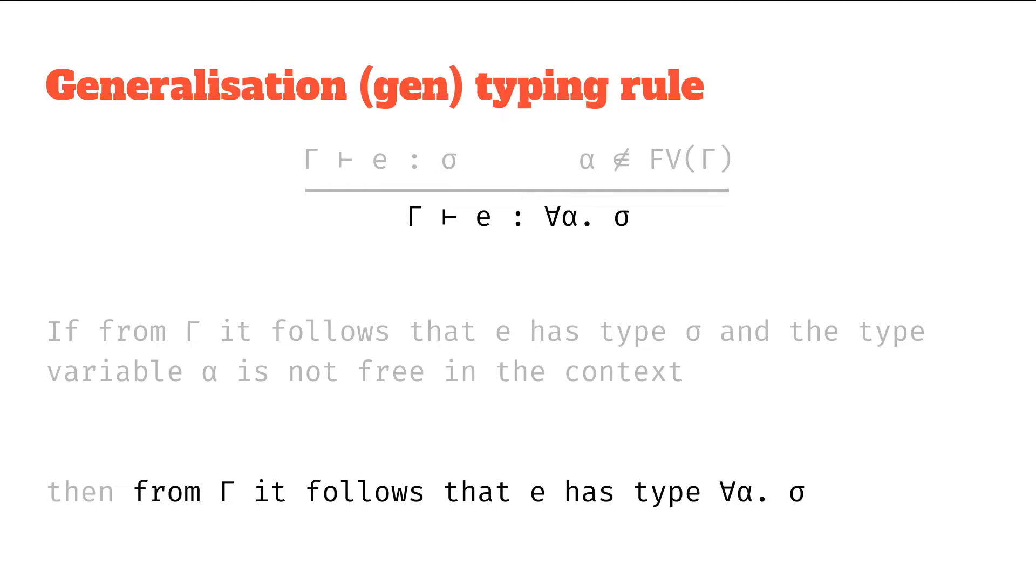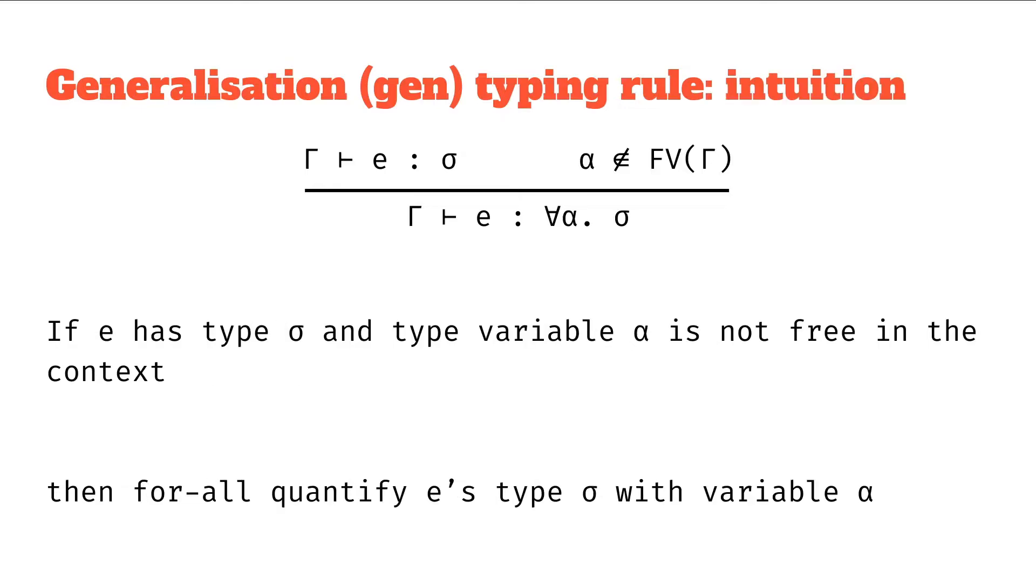We can say E also has type for-all alpha sigma, provided that alpha was not in the free variables in the context. Let's boil this down to its intuition. So if E has type sigma, and type variable alpha is not free in the context, then we can for-all quantify E's type sigma with variable alpha.